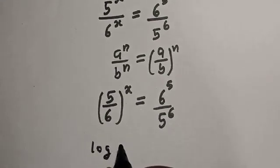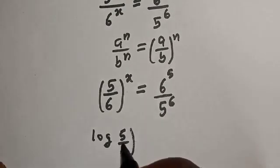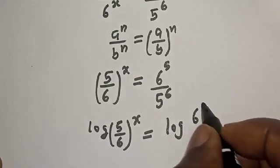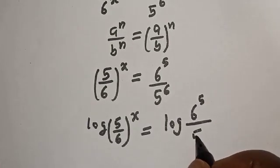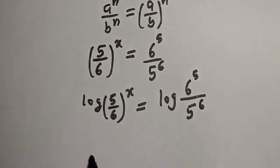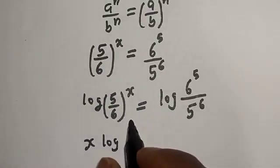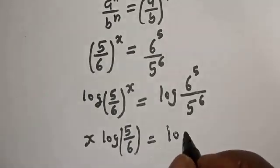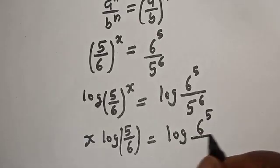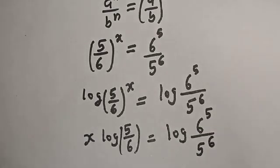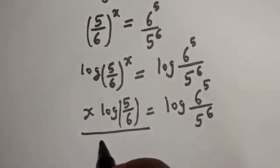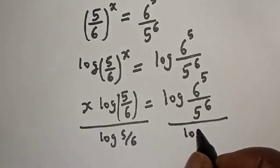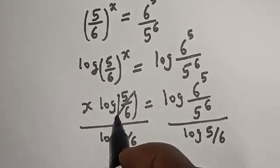Log of 5 over 6 raised to power s is equal to log of 6 raised to power 5 over 5 raised to power 6. This gives us s times log 5 over 6 is equal to log of 6 raised to power 5 over 5 raised to power 6. Now let's divide both sides by log 5 over 6, so this will cancel.